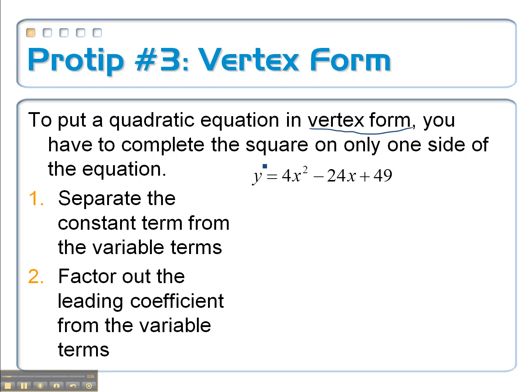So before, instead of having a y here, we had a 0. And we would subtract that 49 over to this side. We wouldn't want this 4 out front, so we would divide everything by 4. And when we completed the square, whatever we added to this side, we added to the other side to keep it balanced. Now we're not going to do that here. What we're going to do instead is we're going to keep it all on one side.